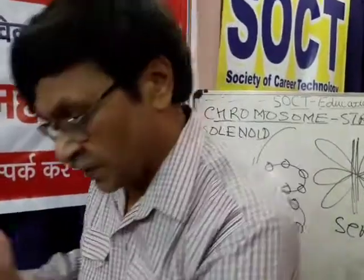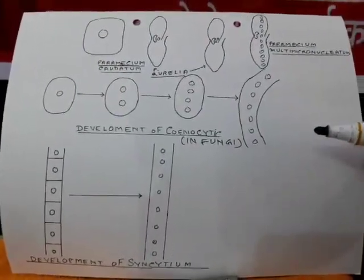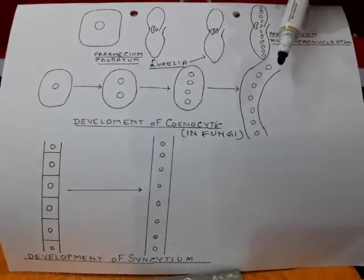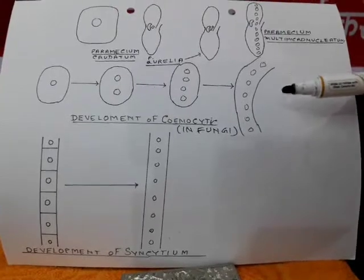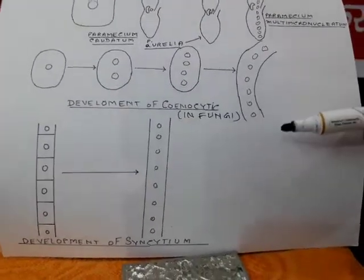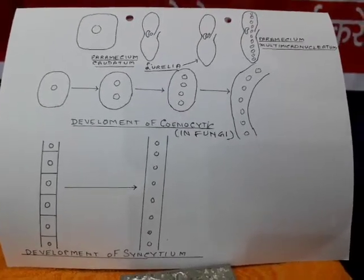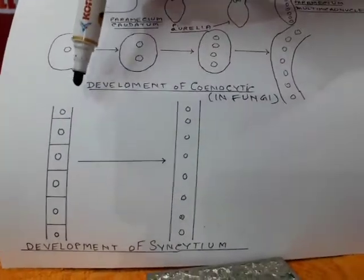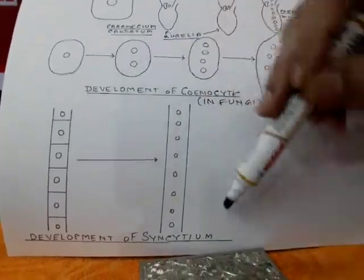In multinucleated cells there may be two situations. One is coenocytic, as in the case of fungi, where development starts from a single cell — the nucleus divides 1 into 2, 2 into 4, 4 into 8 and so on, but the cell does not divide and no cell partitions develop, forming a multinucleated structure. In the case of skeletal muscles, rotifera, or Ascaris epidermis, we get syncytium, which is similar in structure but different in development — it develops from a multicellular organization where many cells were present initially but the cell partitions dissolved.